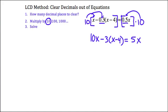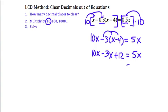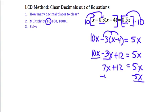Then I'll multiply by the second term, which is the 0.3. So when I take 10 times that 0.3, that's just going to give me 3. So I'd have minus 3 times (x minus 4). On the right side I just have one term, so 10 times the 0.5 gives me 5x. All of the decimals are now cleared out of this equation. Now I'll solve this like any other equation with whole numbers, starting by distributing the negative 3. That gives me 10x minus 3x plus 12 equals 5x.